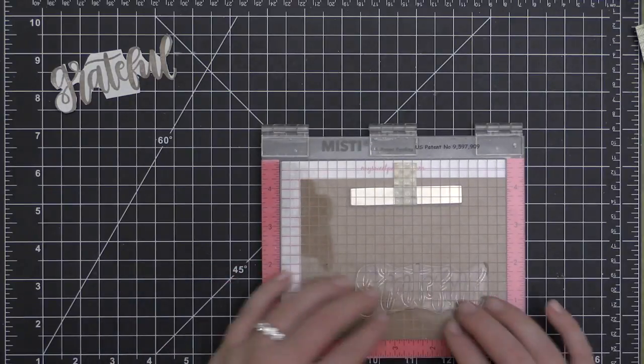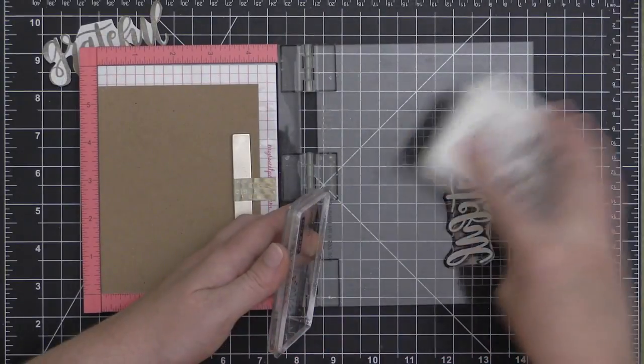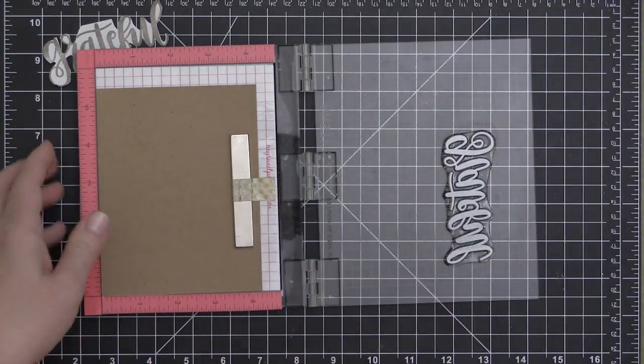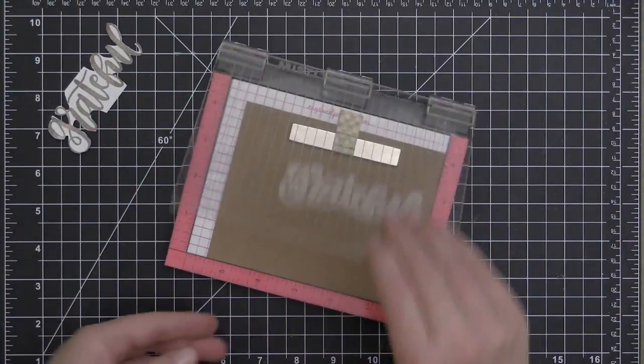Now that I have my mask created and ready to go, I'm going to move over to my MISTI stamping tool to do some of my stamping here. I'm using some craft cardstock.